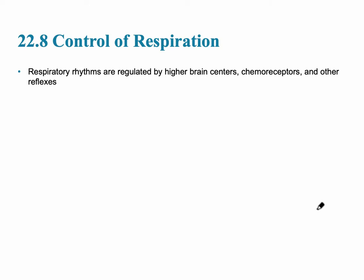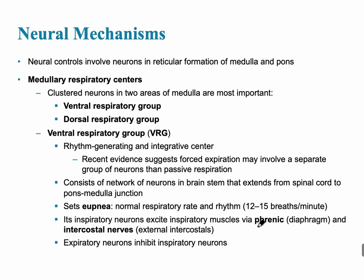The control of respiration is going to happen at higher brain centers. Specifically, it's going to be found in the medulla and the brainstem, and there are also going to be chemoreceptors and other reflexes that can control this. This control is a neural mechanism — there are specific neurons found in the medulla and the pons, so both parts of the brain stem.